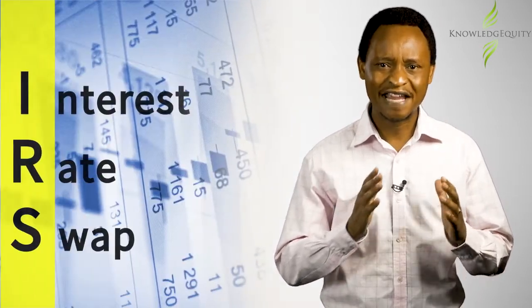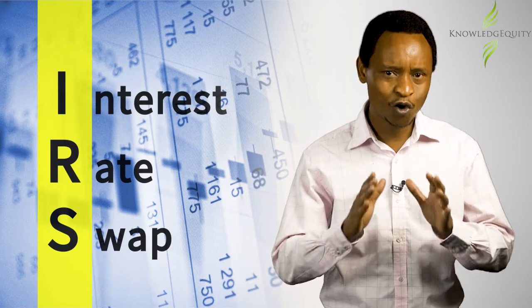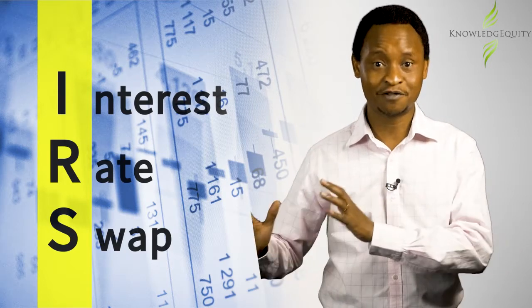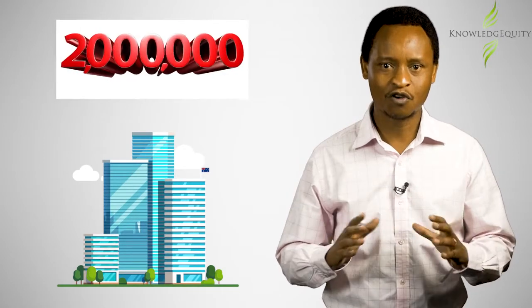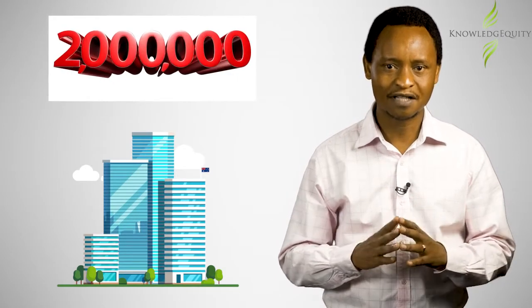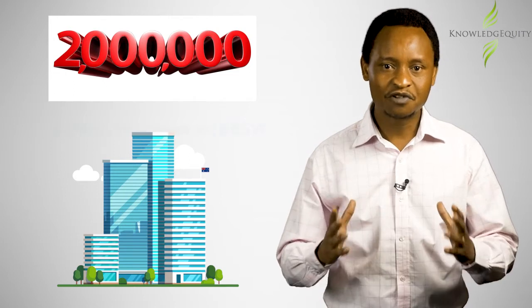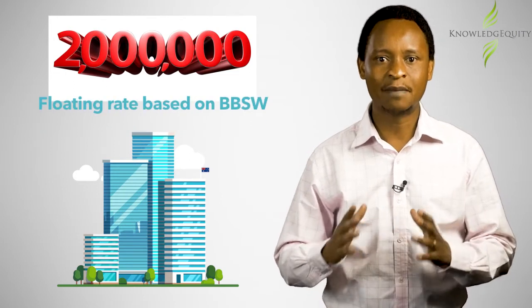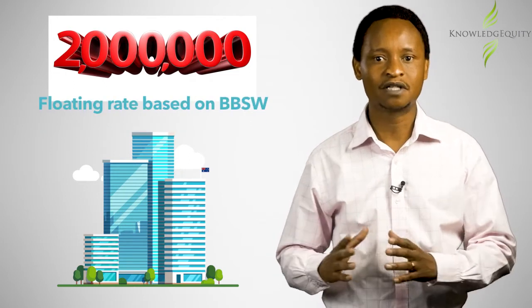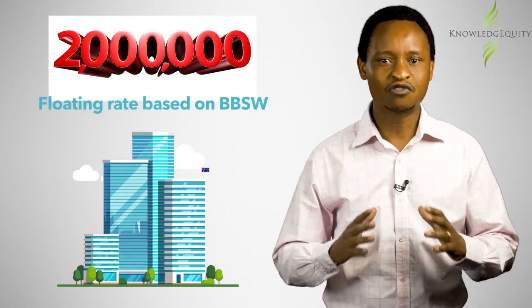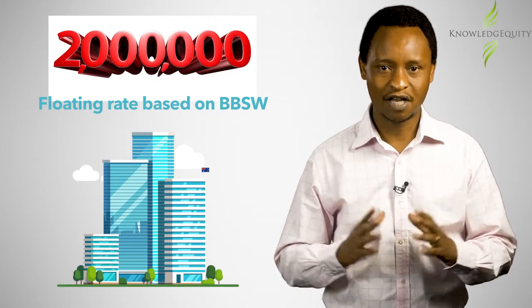Let's look at how this applies when interest rate swaps are used to convert a floating rate exposure into a fixed rate. Consider an Australian organization that has an existing borrowing of two million dollars with three years to maturity. The interest rate is floating and is based on the bank bill swap rate, with the interest payable annually in arrears.